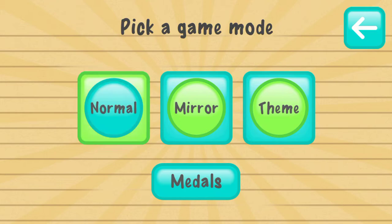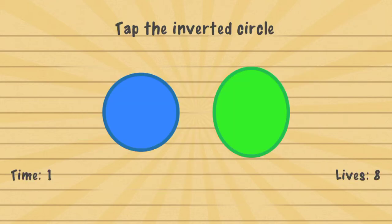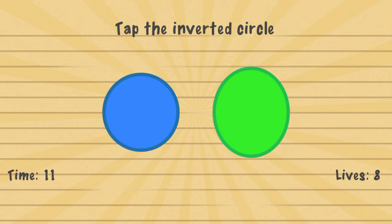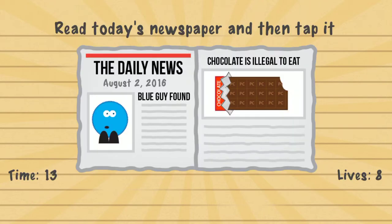Play normal. I'm going to help with the easy questions again so that people can, for good measure, know how to do that. Tap the inverted circle — you tap the blue one.